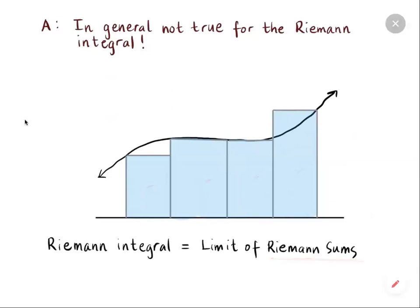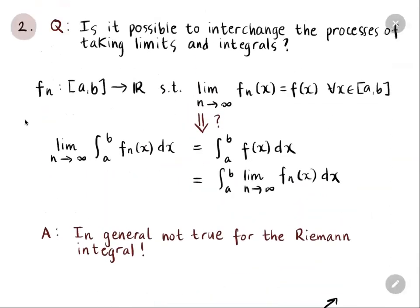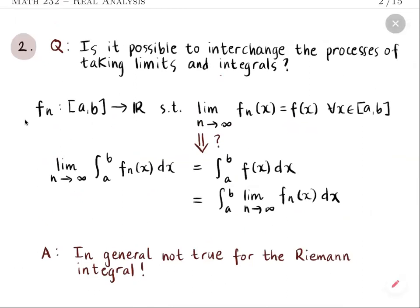One could compute the Riemann integral over an interval [a, b] by taking a finer partition of subintervals and constructing corresponding rectangles. In short, the Riemann integral is also a limit, so the question of interchanging limits and integrals can be rephrased as: can we interchange limits?